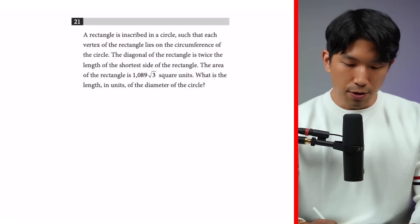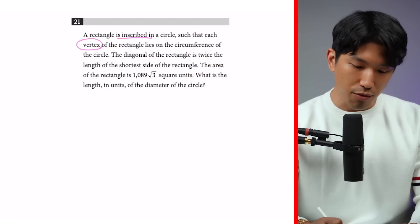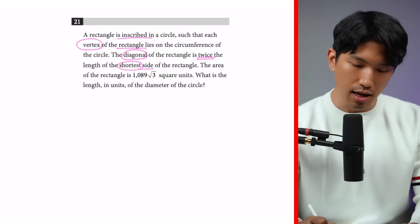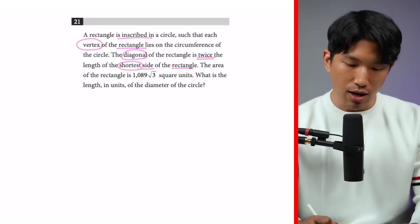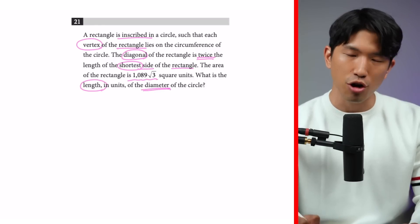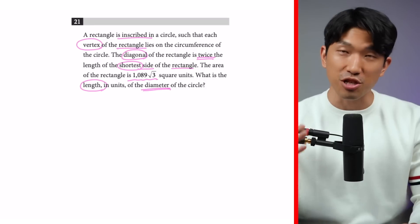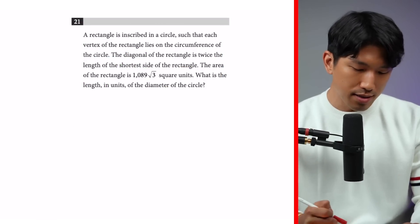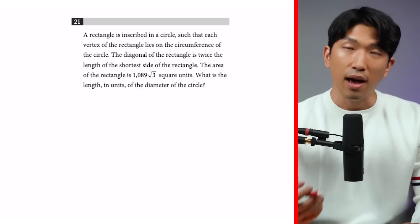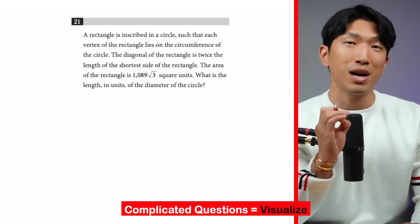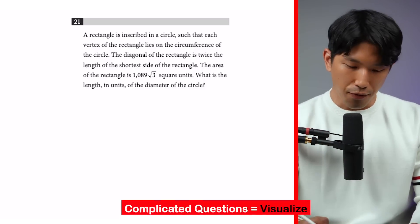Number two: a rectangle is inscribed in a circle such that the vertices of the rectangle lie on the circumference of the circle. The diagonal of the rectangle is twice the length of the shortest side. The area of the rectangle is 1089 root 3 square units. What is the length of the diameter of the circle? That's a lot of words, so let's break it down piece by piece. For complicated wordy questions, I highly recommend visualizing what the question is telling you.